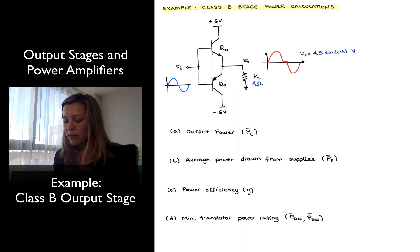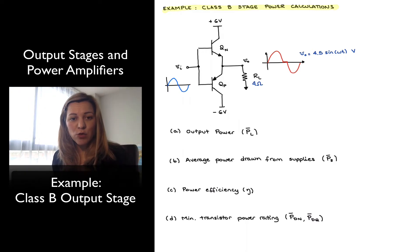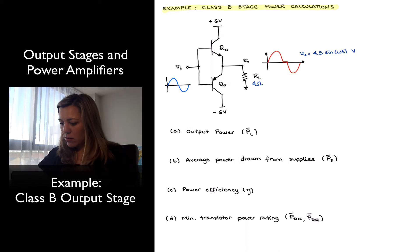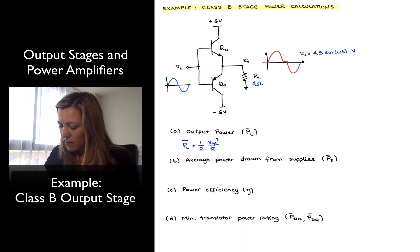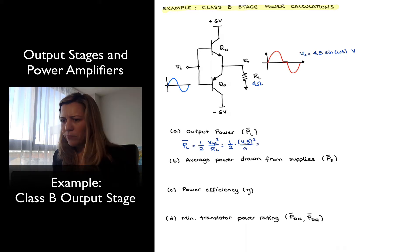The first thing I'm going to calculate is the output power, which is the power delivered to the load. Since we're talking about a sinusoidal signal, we typically will calculate the average power over a cycle. I can calculate my average power delivered to the load over one cycle as simply one-half of VOP squared divided by RL, in this case one-half of 4.5 volts squared divided by 4, which is the load resistance. That gives me 2.53 watts.